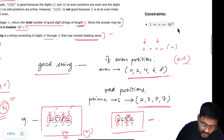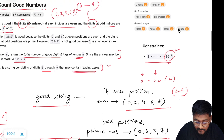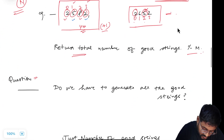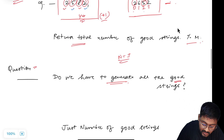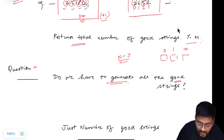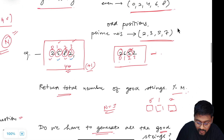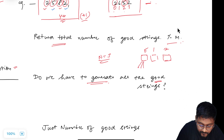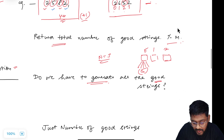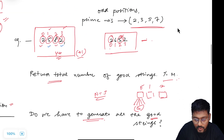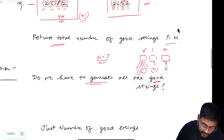The value of n can go up to 10^15, which is quite large. Now, do we have to generate all the good strings? If n is equal to 3, with indices 0, 1, 2 — at index 0 (even), we have 5 possibilities. At index 1 (odd), we have 4 possibilities (only prime numbers). At index 2 (even), we have 5 possibilities again. So it alternates: 5, 4, 5, 4 and so on.